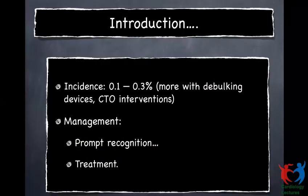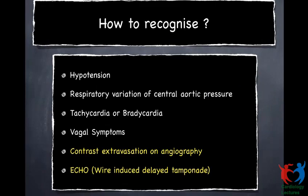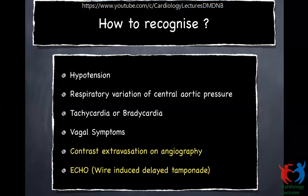We know that coronary perforations can happen in one in a thousand cases. The management would be prompt recognition and treatment. How do we recognize when you develop a coronary perforation? The patient becomes hypotensive. You could see respiratory variation of central aortic pressure on the monitor. You could have tachycardia or bradycardia, vagal response. The patient starts yawning. And most importantly, you could see contrast extravasation on angiography.